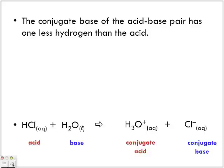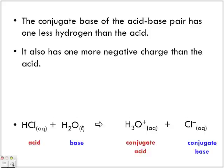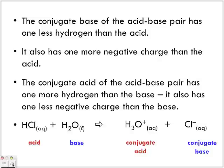Now, the conjugate base of the acid-base pair has one less hydrogen than the acid. It also has one more negative charge than the acid. So the conjugate acid of an acid-base pair has one more hydrogen than the base. It also has one less negative charge than the base. So what we have here, notice now, we've got the positive charge and negative charge. So the positive charge associated with the conjugate acid, the negative charge with the conjugate base.